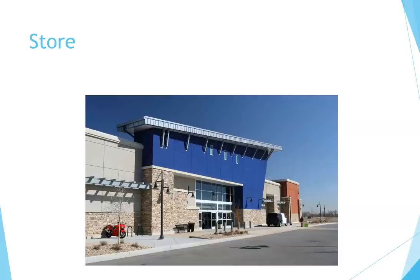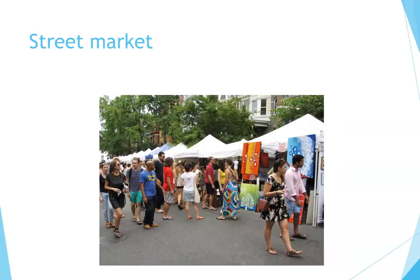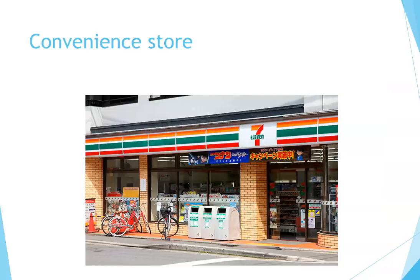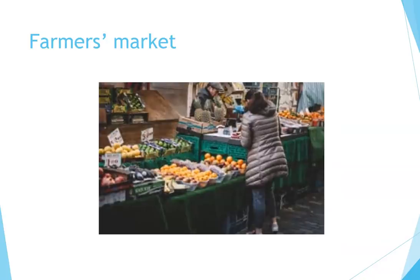Store: a store is where you buy specialized items, for example a computer store or a shoe store. Street market: a street market is where individual vendors sell their goods to the public. Mall or shopping mall: a shopping mall is where there are lots of shops or stores together in one place. Convenience store: a convenience store is where you can buy things 24 hours a day. Farmer's market: a farmer's market is where you can buy fruits and vegetables.